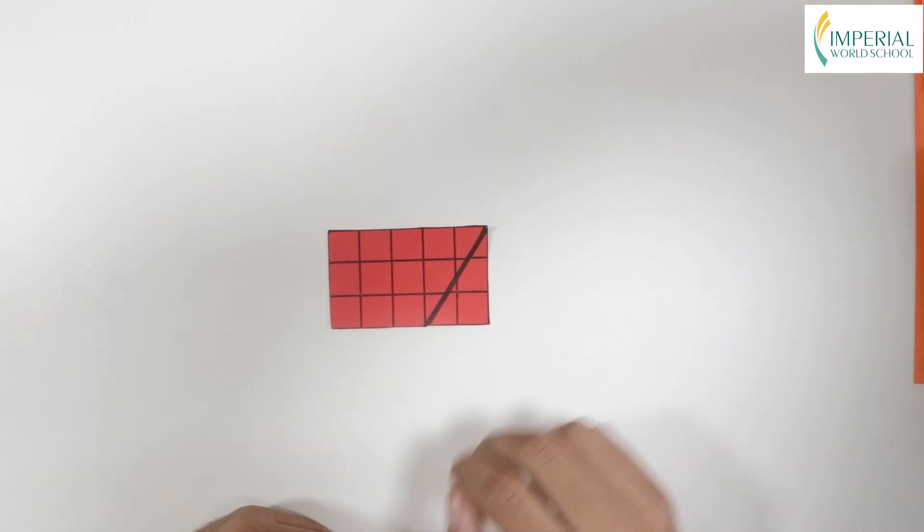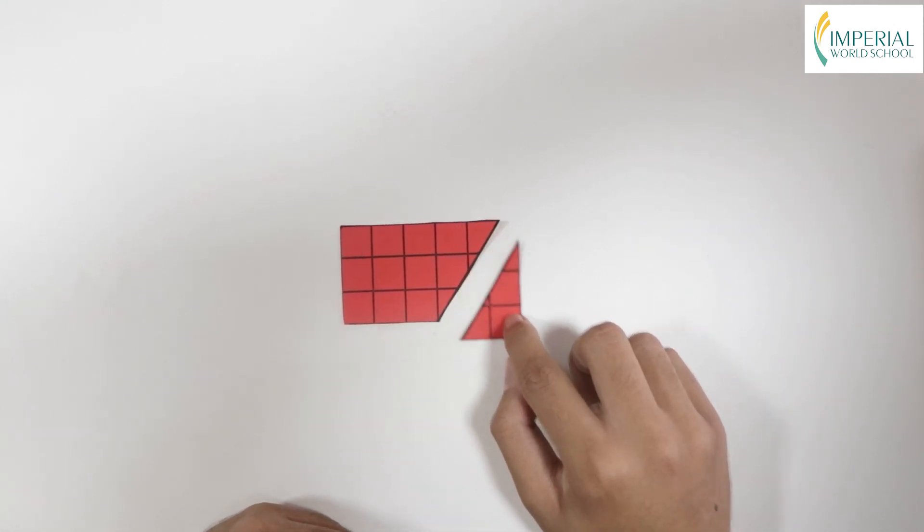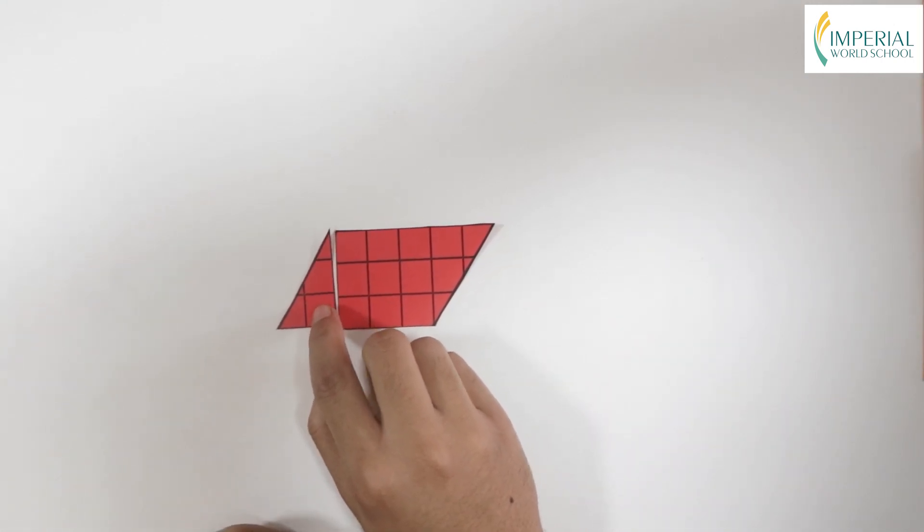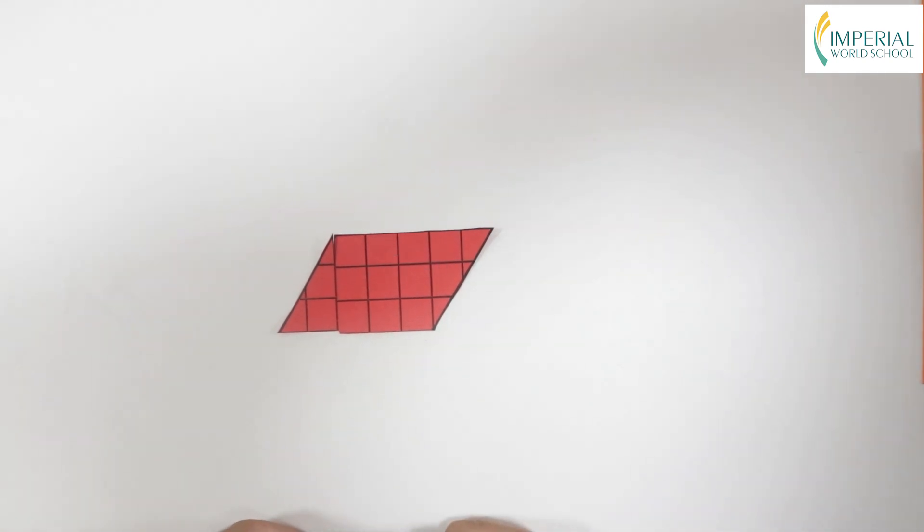With this we can now take this portion of the rectangle to the other side which then converts into a parallelogram. With this we now know the area of a rectangle and the area of a parallelogram are equal which is 15 square units.